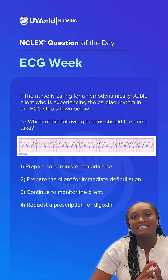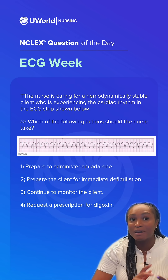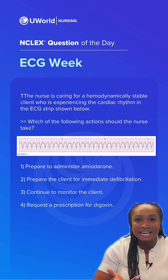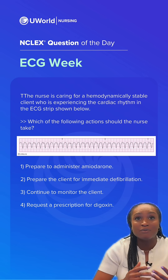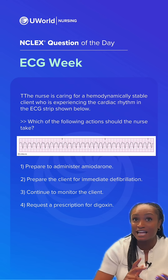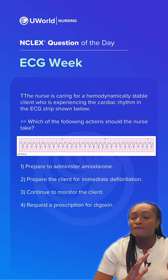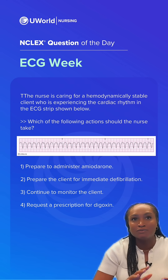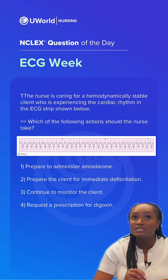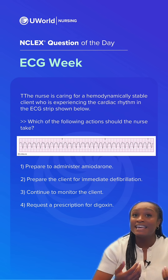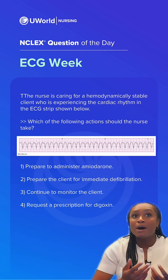So let's first identify the rhythm. I don't see any P waves, and what I do see that look like QRS waves look fast and abnormal, so I know it's going to be a ventricular rhythm. In this case, it's V-TAC.